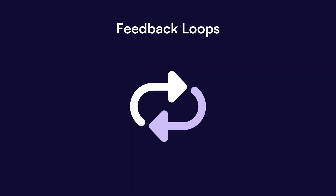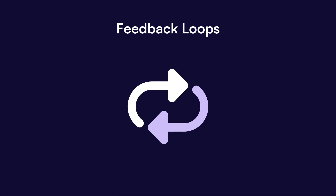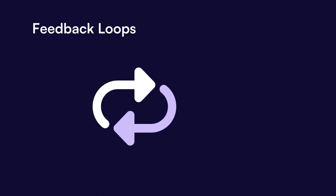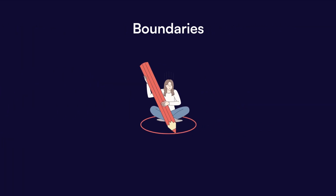Feedback loops are processes through which a system regulates itself through cycles of input and output. In systems theory, boundaries refer to the edges that define the limits of a system or subsystem.